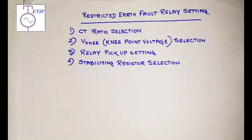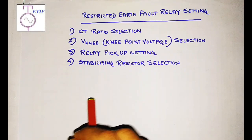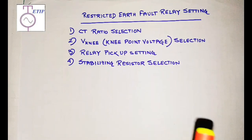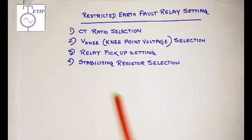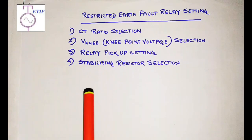Hello and welcome back to our channel, Electrical Technology and Industrial Practice. In continuation with my previous video, I will complete the restricted earth fault relay setting. In the last video we discussed the CT ratio selection — how the ratio of the line CT and neutral CT is to be selected for restricted earth fault protection. If you have not watched those two videos, I am giving the link in the i-button, so please check those first.